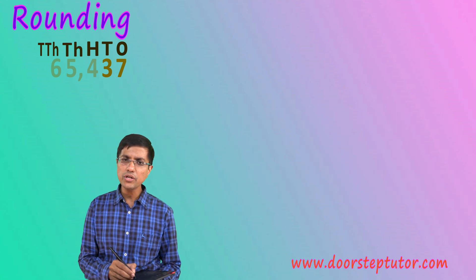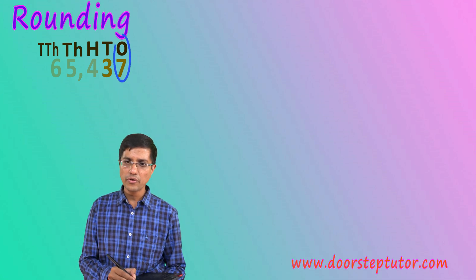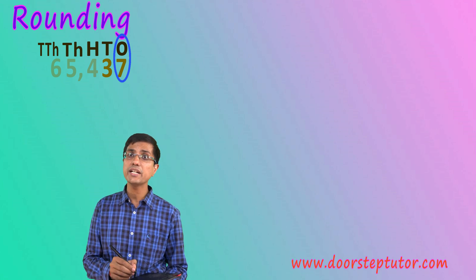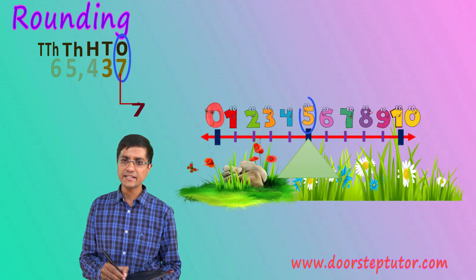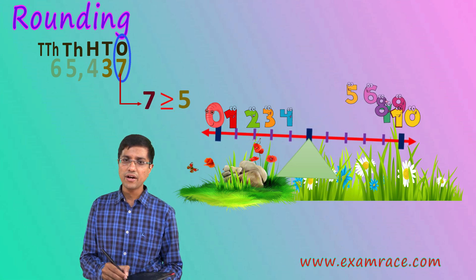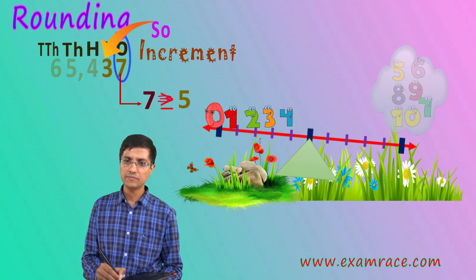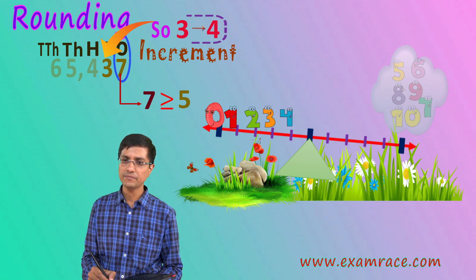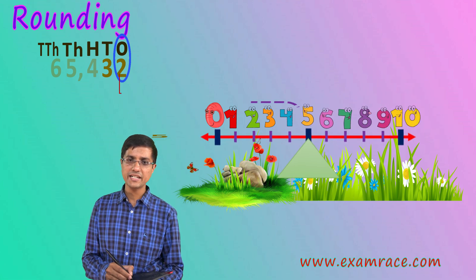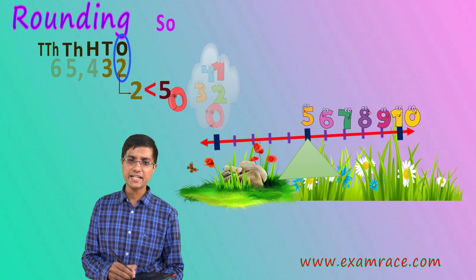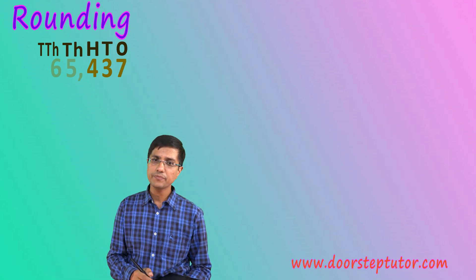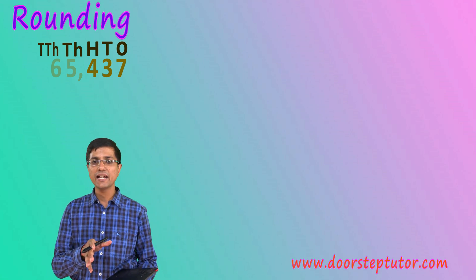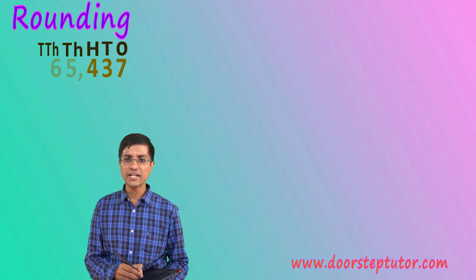So what did I do? I looked at the ones digit — the digit right next to the tens digit. If this digit is 5 or greater than 5, I increment the tens digit. If this digit is less than 5, then the tens digit remains as is and I don't touch it. This is the process of rounding: it involves the digit we are rounding to and the digit right next to it.